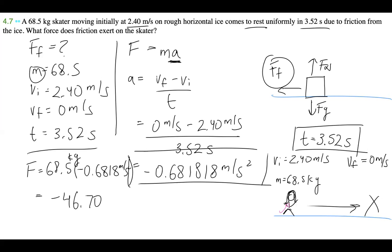If we multiply that together, we get -46.70. This minus really indicates that it's in the opposite direction as the skater.